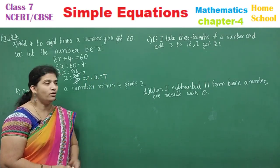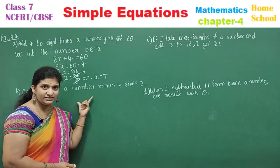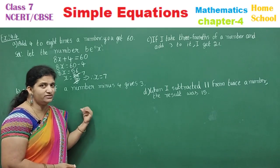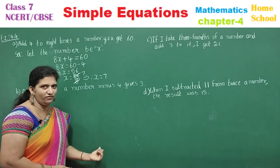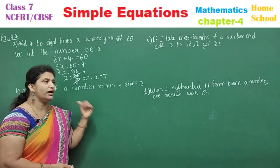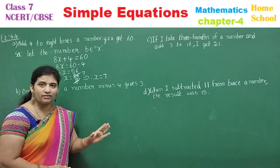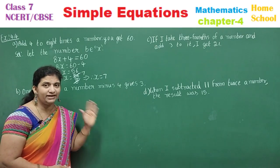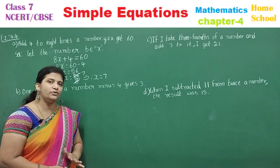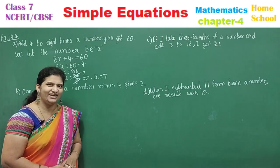Therefore x = 7, so the number is 7. It's very easy — understand the statement, frame the equation, then solve it. You can pause the video, solve the remaining problems, and then check after you complete them.